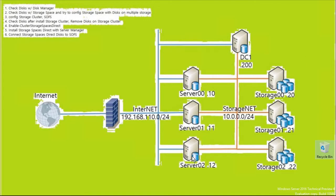Over here, this is the topology. On the left side, we have storage server 00, 01, and 02. They have a bunch of direct access storage, combined and bound together, and serve it to the left side servers.